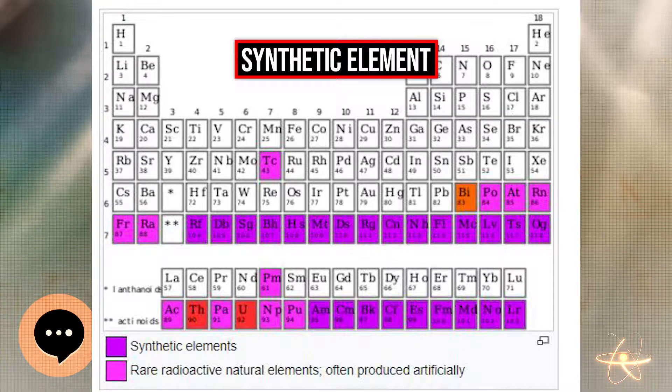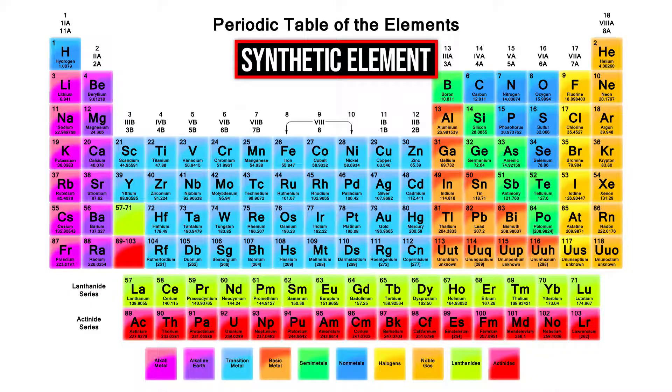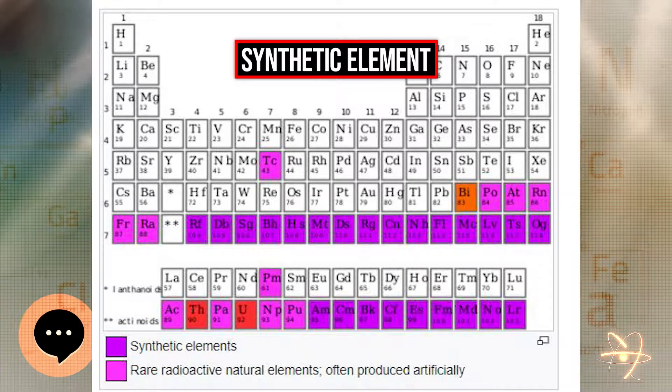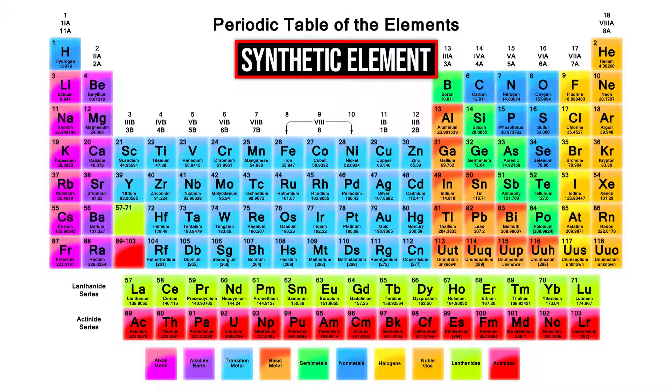The last five known elements—flerovium, moscovium, livermorium, tennessine, and oganesson—were discovered by Russian-American collaborations and complete the seventh row of the periodic table. No elements with an atomic number greater than 99 have any uses outside of scientific research, as they have extremely short half-lives.